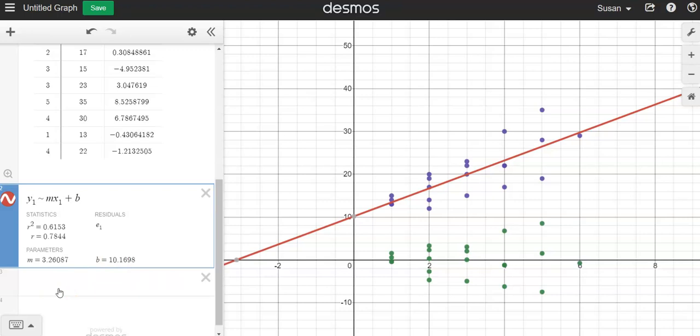Now to write the equation on your assignments, you would write y equals 3.26x plus 10.17. You would round your digits off to whatever place is reasonable. I wouldn't round it off to the nearest whole number, but maybe put a few digits past the decimal for both slope and y-intercept. If y'all have any questions about any of this, be sure to let me know. Y'all have a great day.